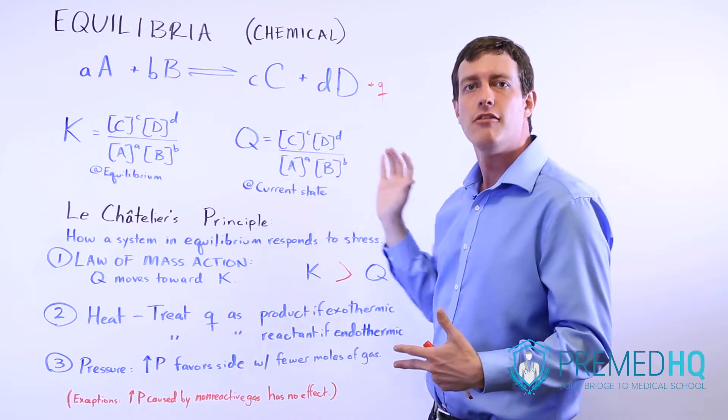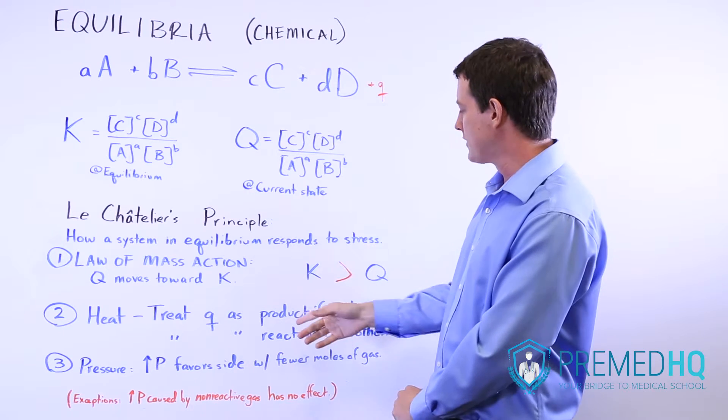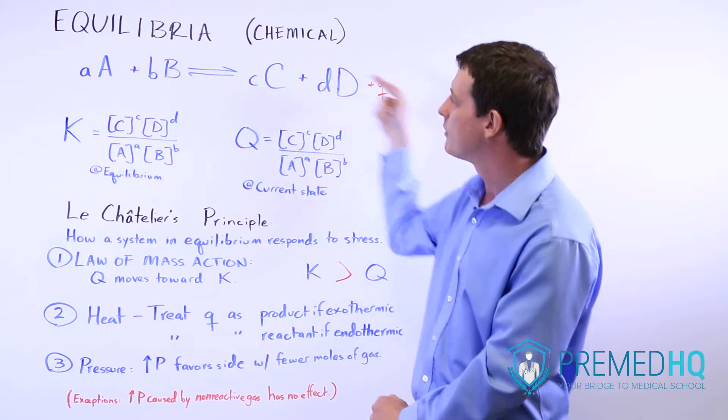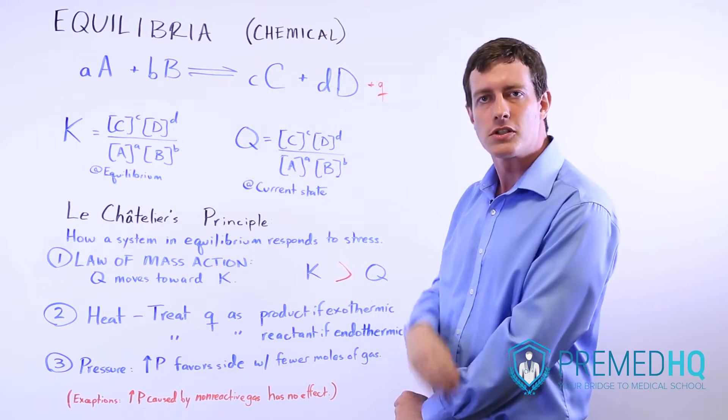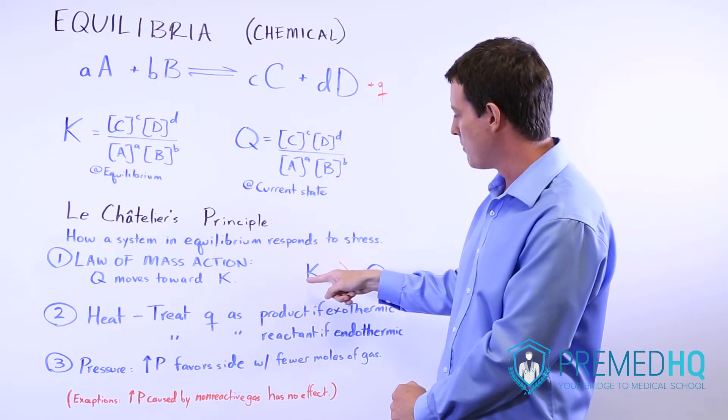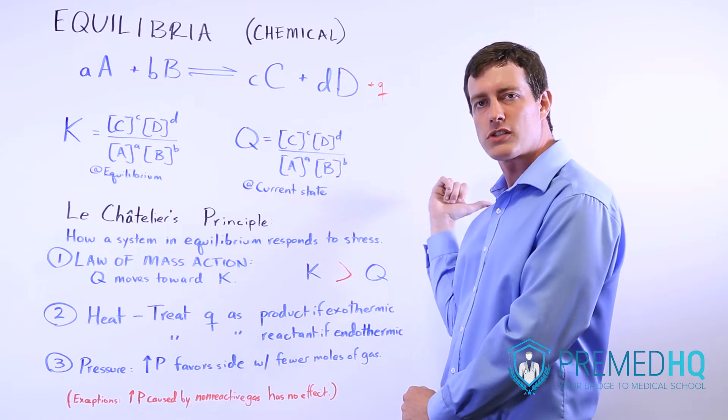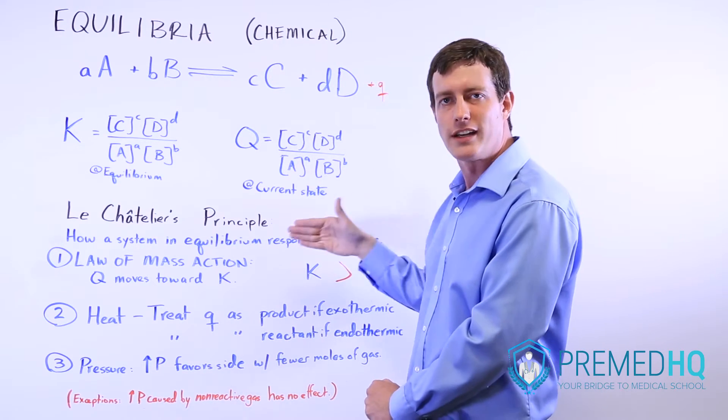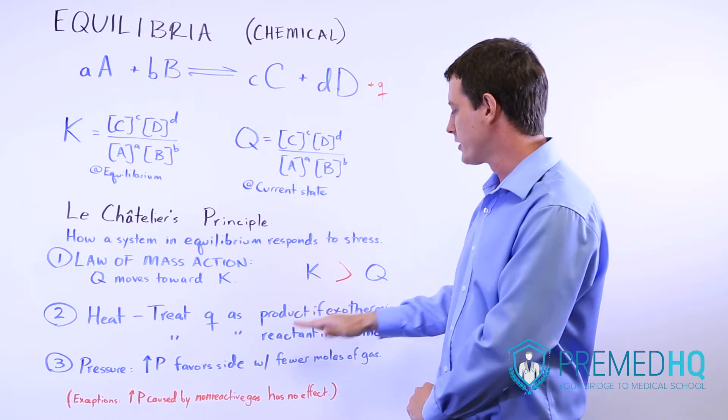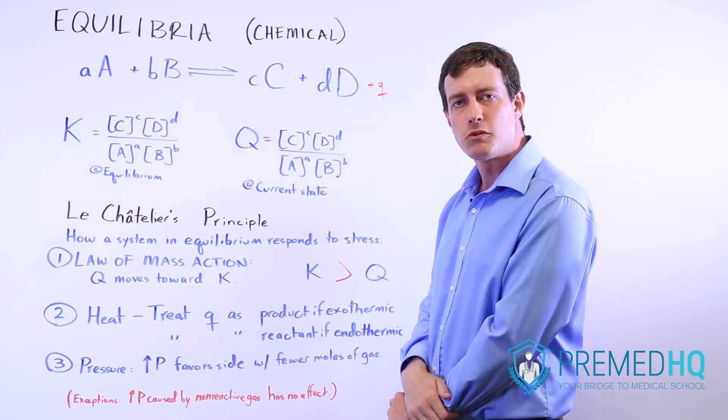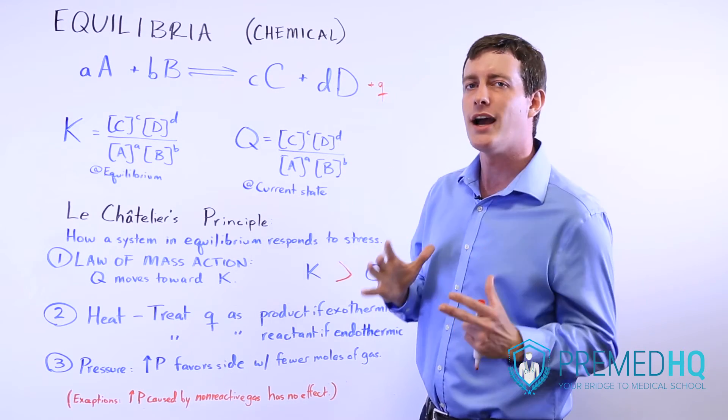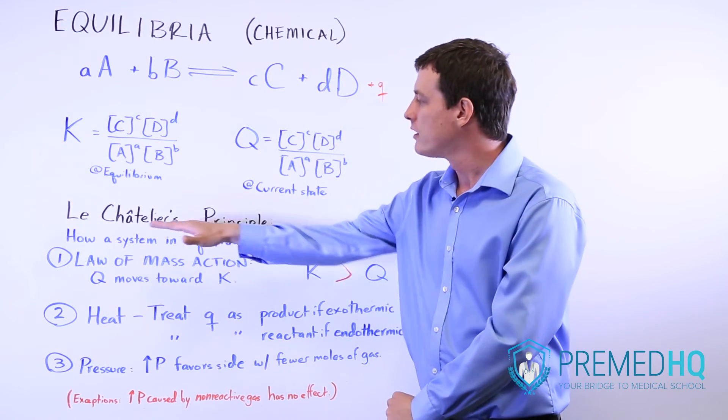Otherwise, increased pressure favors the side with fewer moles of gas, and if it's an exothermic reaction, if you were to increase the amount of heat, that would be essentially increasing the amount of product, and thus it would push the reaction toward the left in order to resolve that stress. So there are three parts of Le Chatelier. You have the law of mass action, which is Q moving toward K, and remember that if you draw a greater than symbol, that works like an arrow to the right, and if you draw a less than symbol, that will work like an arrow to the left, so it tells you which way the reaction goes. You also have to consider heat as either a product or a reactant, and you have to consider pressure. Those are the three things that influence the movement of a system that was previously in equilibrium, but now has some stress imposed upon it. That's all part of Le Chatelier's principle.